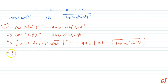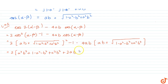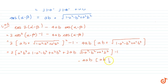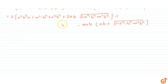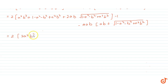Expanding the bracket, we get twice of [a²b² + 1 - a² - b² + a²b² + 2ab·√(1 - a² - b² + a²b²)] minus 1, and then minus 4ab·[ab + √(1 - a² - b² + a²b²)]. The first bracket simplifies to 2[2a²b² + 2ab·√(1 - a² - b² + a²b²)] and the remaining terms include -1, -4a²b², and -4ab·√(1 - a² - b² + a²b²).